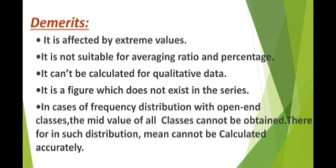In frequency distributions with open-end classes, the mid-value cannot be obtained. Therefore, in such distributions, mean cannot be calculated accurately. These are the main demerits of arithmetic mean.